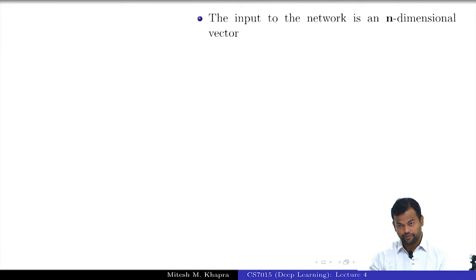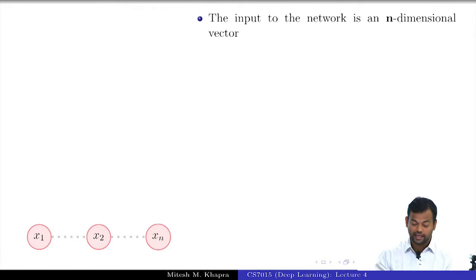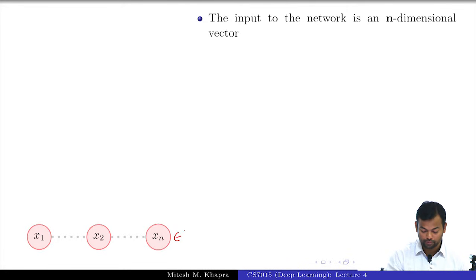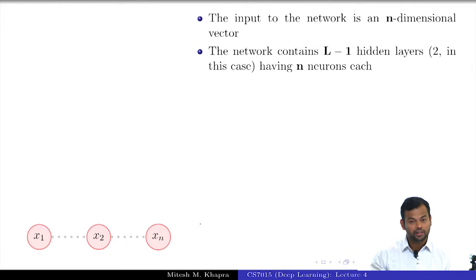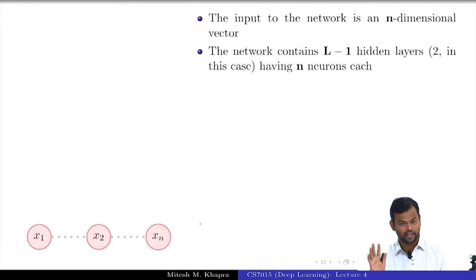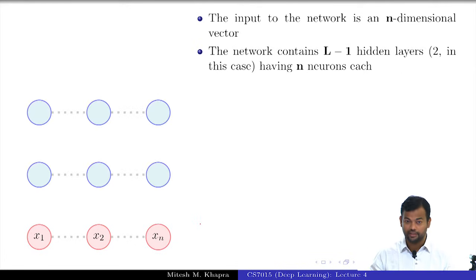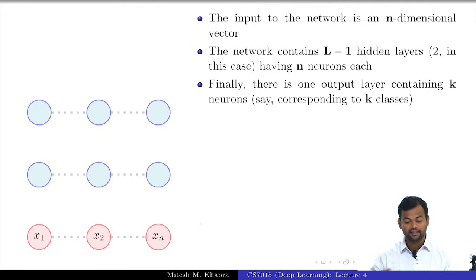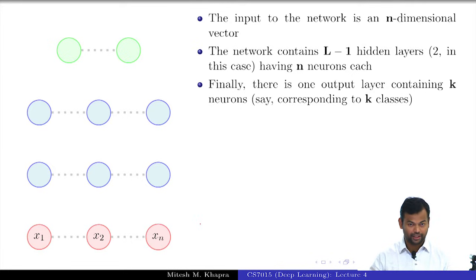What is a feed forward neural network? The input to the network is an n-dimensional vector — so the input belongs to R^n. The network contains L minus 1 hidden layers, which we have already defined since the multilayered perceptron. It then has one output layer containing K neurons. This is what the feed forward neural network looks like.